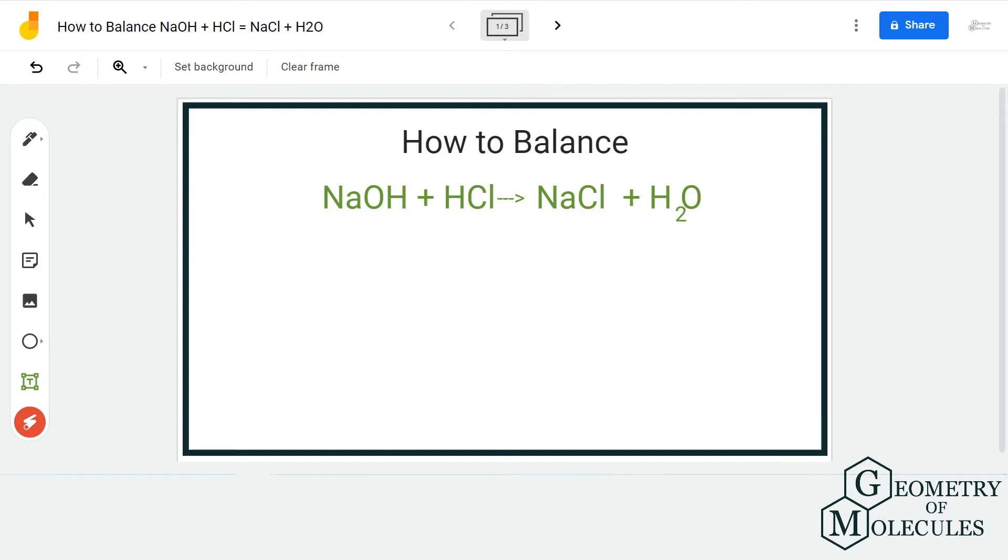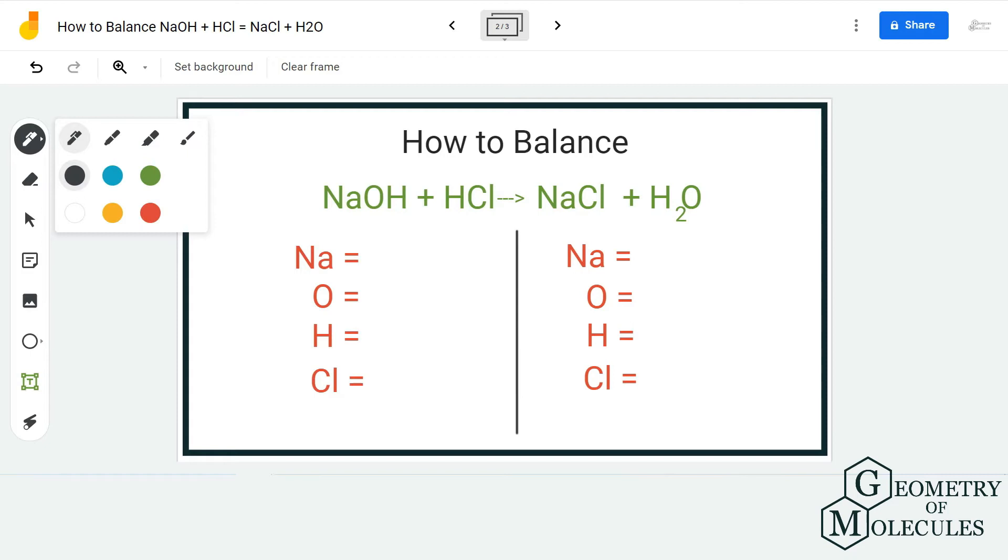To find out the balanced equation for this reaction, we first need to find out the number of atoms on both the reactant side and product side individually because it helps us understand the coefficients that we need to put on both sides to balance this equation.